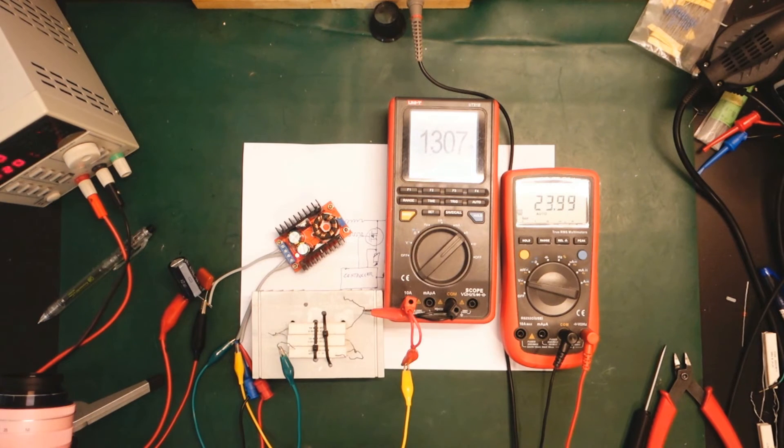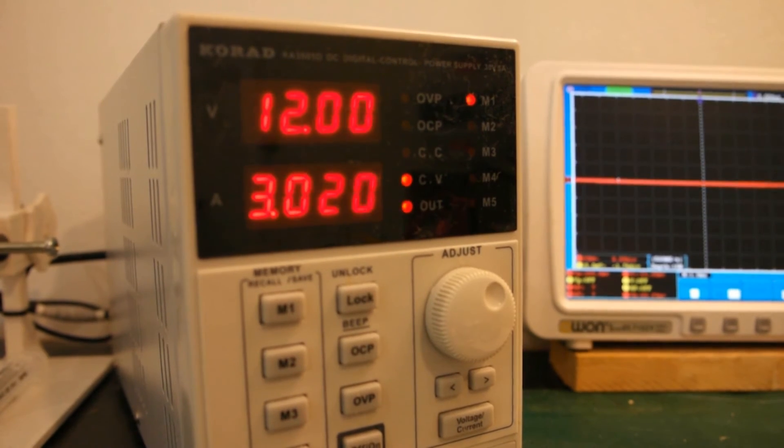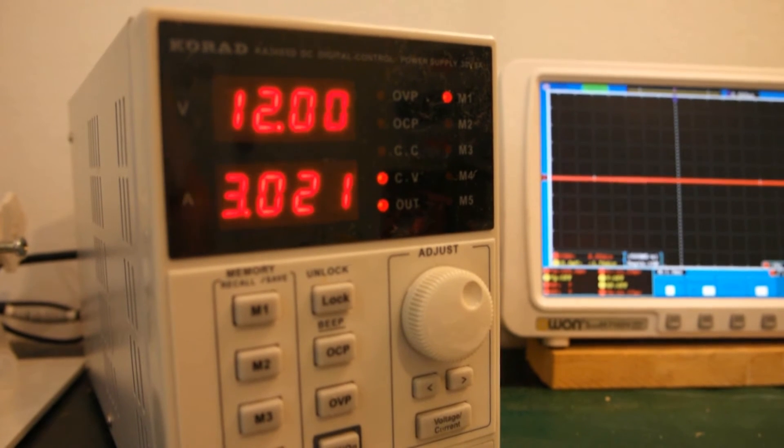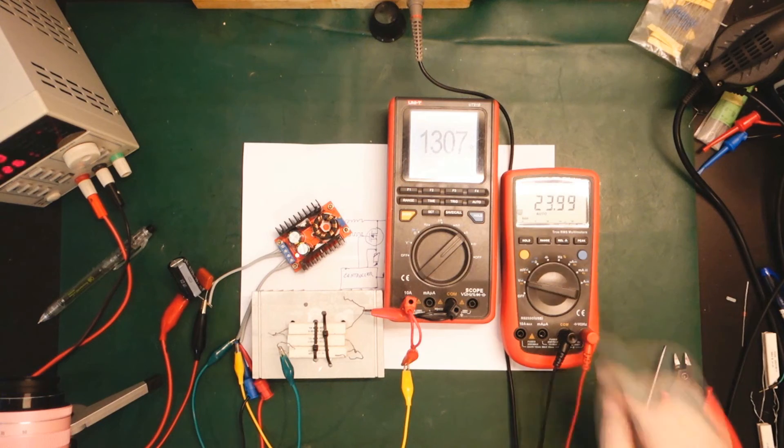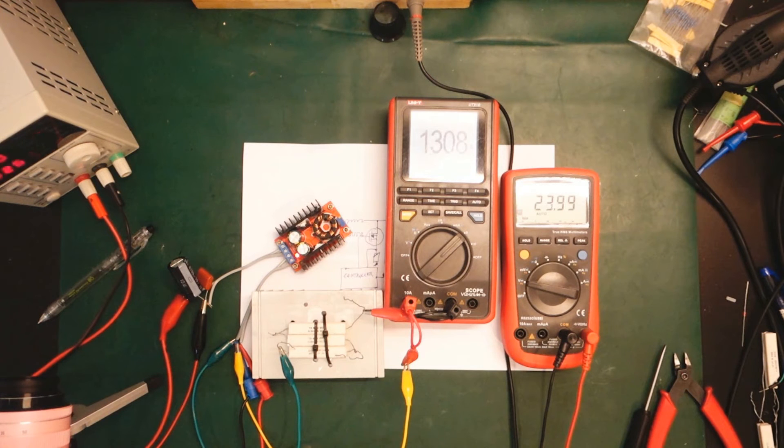That looks much better. Let's just try to switch the power supply here. You can see, now we have a stable 12 volt and 3 amps. Well, it helps. Actually, the voltage here went up to 24 volts or close to 24 volts again.